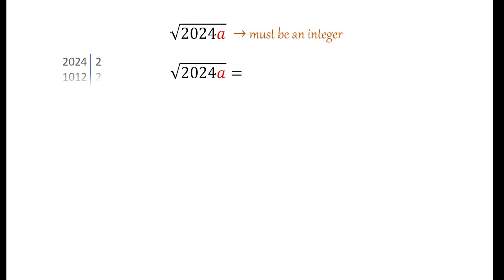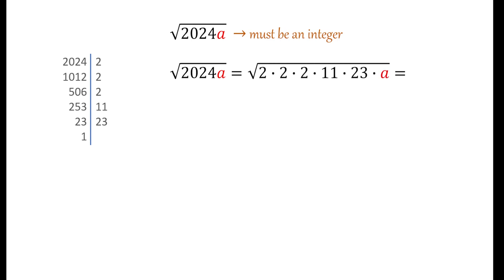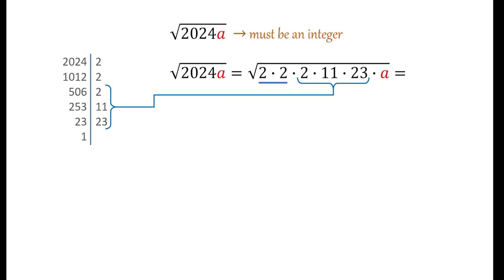We proceed by simplifying 2024 using its prime factorization. We can write 2024 as 2 × 2 × 2 × 11 × 23. We have a pair of 2s, so a factor of 2 comes outside the square root, while the remaining primes 2, 11, and 23 stay inside. Their product is 506, so √2024 = 2√506.